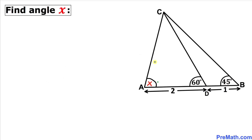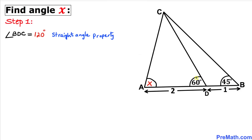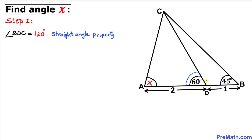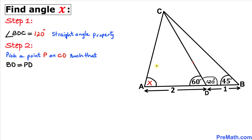Let's get started with the solution. Looking at angle D which is 60 degrees, we know this whole angle is 180 degrees. Therefore this supplementary angle is going to be 180 minus 60 equals 120 degrees. So angle BDC is 120 degrees.